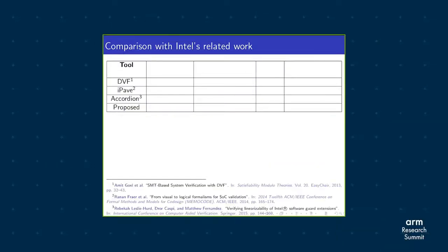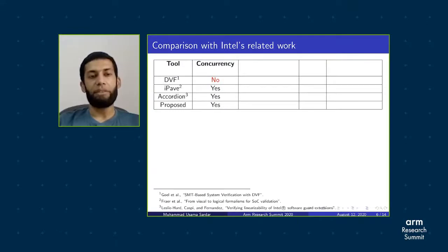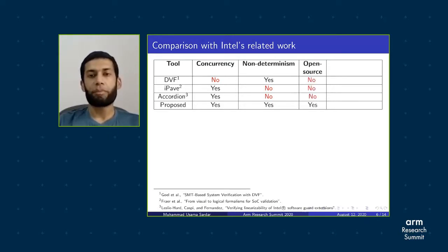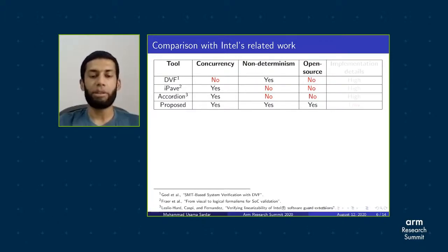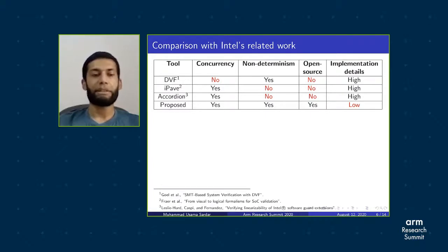Here we compare Intel's tools with our proposed one. DVF does not model concurrency. IPAV and Accordion, on the other hand, do not support non-determinism. Intel is secretive about its validation processes, as none of the proofs or even the tools are available to the public. Finally, the compromise our approach makes is on the level of implementation details.